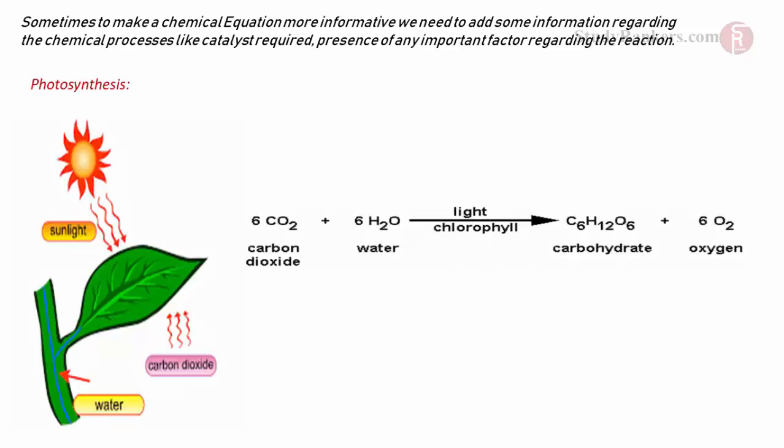Sometimes, to make a chemical equation more informative, we need to add information regarding the chemical process, like catalyst required or the presence of any important factor regarding the reaction. Here, in photosynthesis, the presence of sunlight and chlorophyll is required, which has been mentioned in the equation.